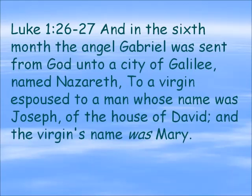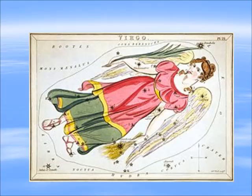Another interesting thing that happened in the sixth month is documented in Luke 1. In the sixth month, the angel Gabriel was sent from God unto a city of Galilee named Nazareth, to a virgin espoused to a man whose name was Joseph of the house of David, and the virgin's name was Mary. So we have the announcement to Mary of her being the chosen vessel to carry the Messiah into the world, and this happens in the sixth month. And as it just happens to turn out, the constellation for this month — the month of Elul, the sixth month — is Virgo, the virgin.